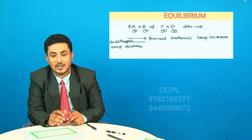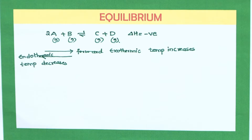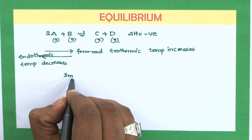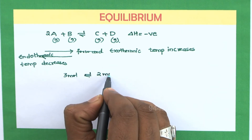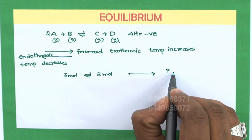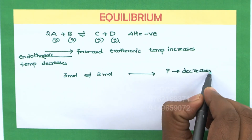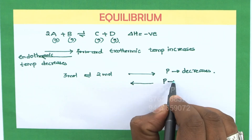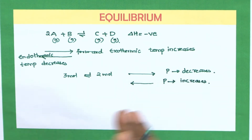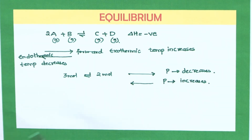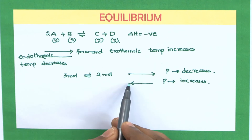Let us consider the effect of pressure. Pressure depends upon the number of moles. Looking at the reaction, 2 moles of A and 1 mole of B — that is 3 moles of reactants — give 2 moles of product, so the forward reaction decreases the number of moles and hence the pressure. In the backward reaction, 2 moles become 3 moles, so pressure increases. Therefore, if I increase the pressure, the system favors the forward reaction to decrease it; if I decrease the pressure, it favors the backward reaction.